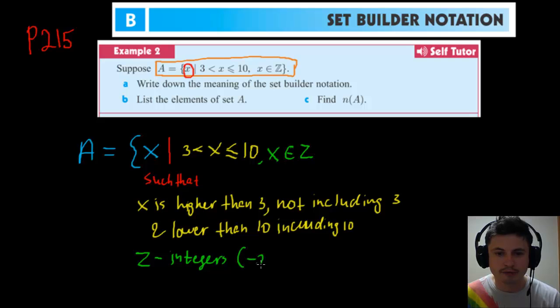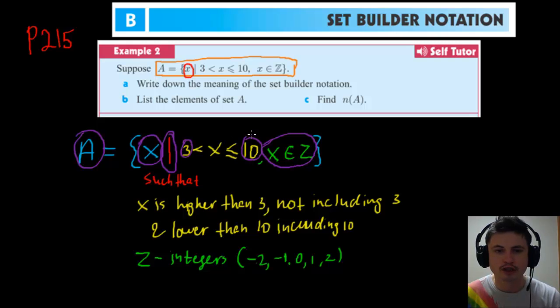Now let's summarize this so we can say this all together. Here, A is the set of all X such that X is an integer between 3 and 10 including 10. This is basically how we say this particular thing here.